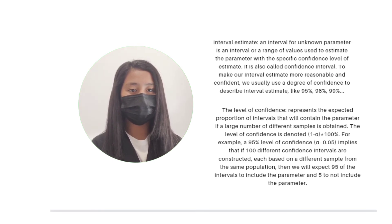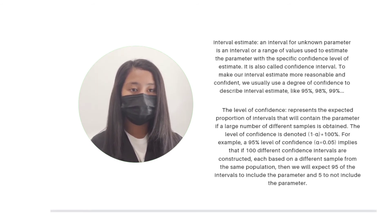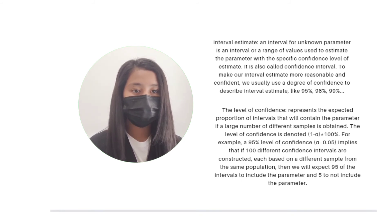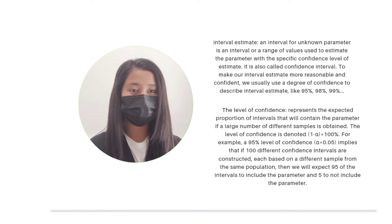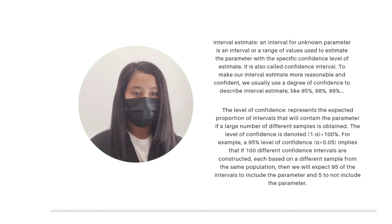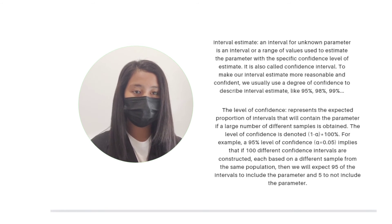An interval estimate is an interval or range of values used to estimate a parameter with a specific confidence level. It is also called a confidence interval. To make our interval estimate more reasonable and confident, we usually use a degree of confidence such as 95%, 98%, 99%, and so on. The level of confidence represents the expected proportion of intervals that will contain the parameter if a large number of different samples is obtained. The level of confidence is denoted 1 minus alpha multiplied by 100%. For example, a 95% level of confidence implies that if 100 different confidence intervals are constructed, each based on a different sample from the same population, then we will expect 95 of the intervals to include the parameter and 5 to not include the parameter.